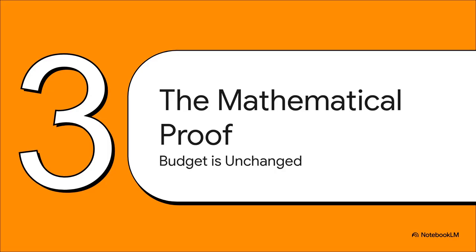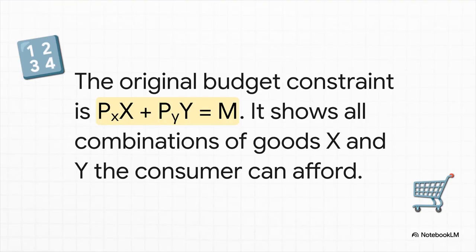Now for section three: the mathematical proof. We get the idea intuitively, but to get top marks, you've got to prove it with the math — that's what the examiners are really looking for. The whole proof comes down to showing one thing: that the consumer's budget constraint — their menu of affordable options — doesn't change at all. Step one: we start with the classic budget constraint equation. It says the price of good X times the quantity of X, plus the price of good Y times the quantity of Y, must equal total income M.